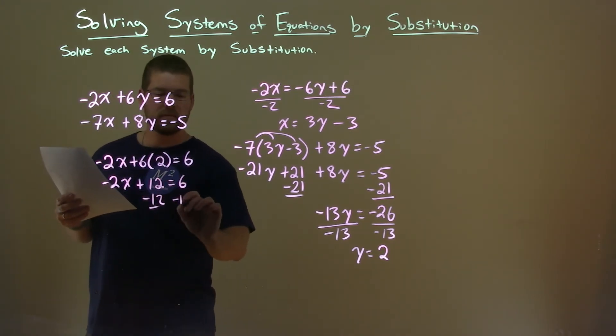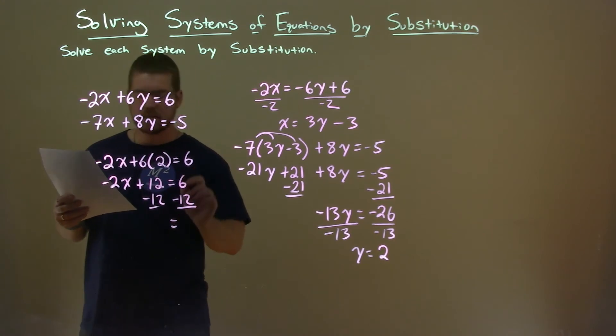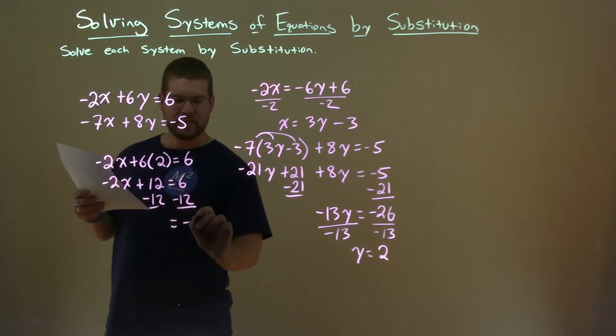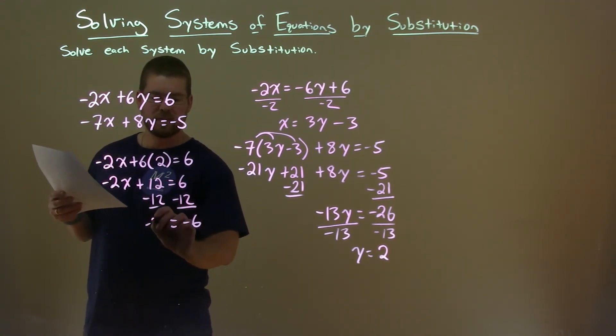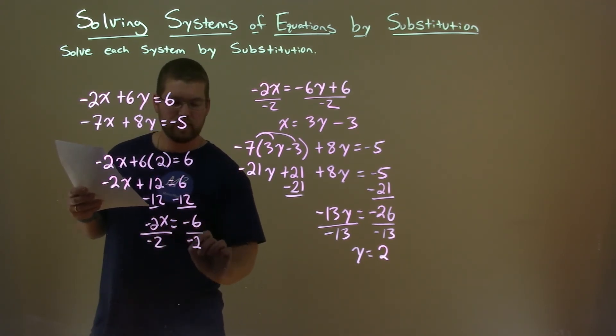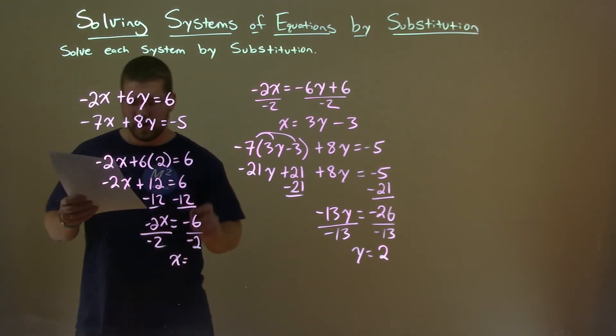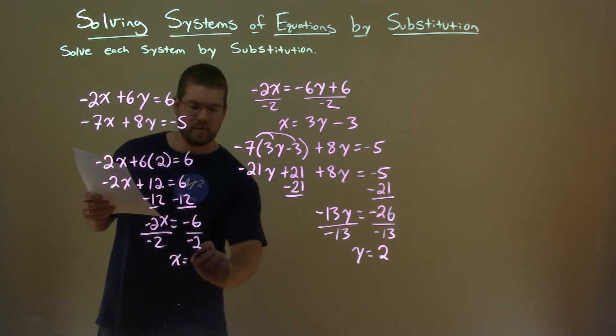Subtract the 12 to both sides. And 6 minus 12 is negative 6. And then negative 2x comes down. Divide both sides by negative 2. And x equals negative 6 divided by negative 2, positive 3.